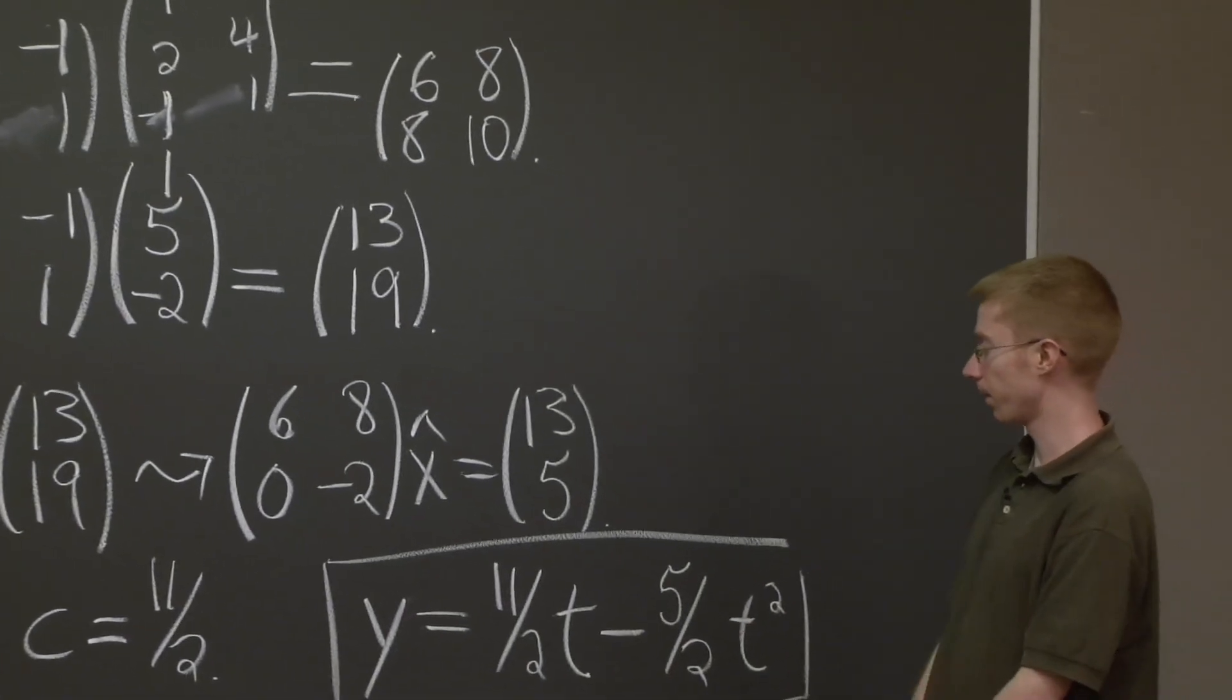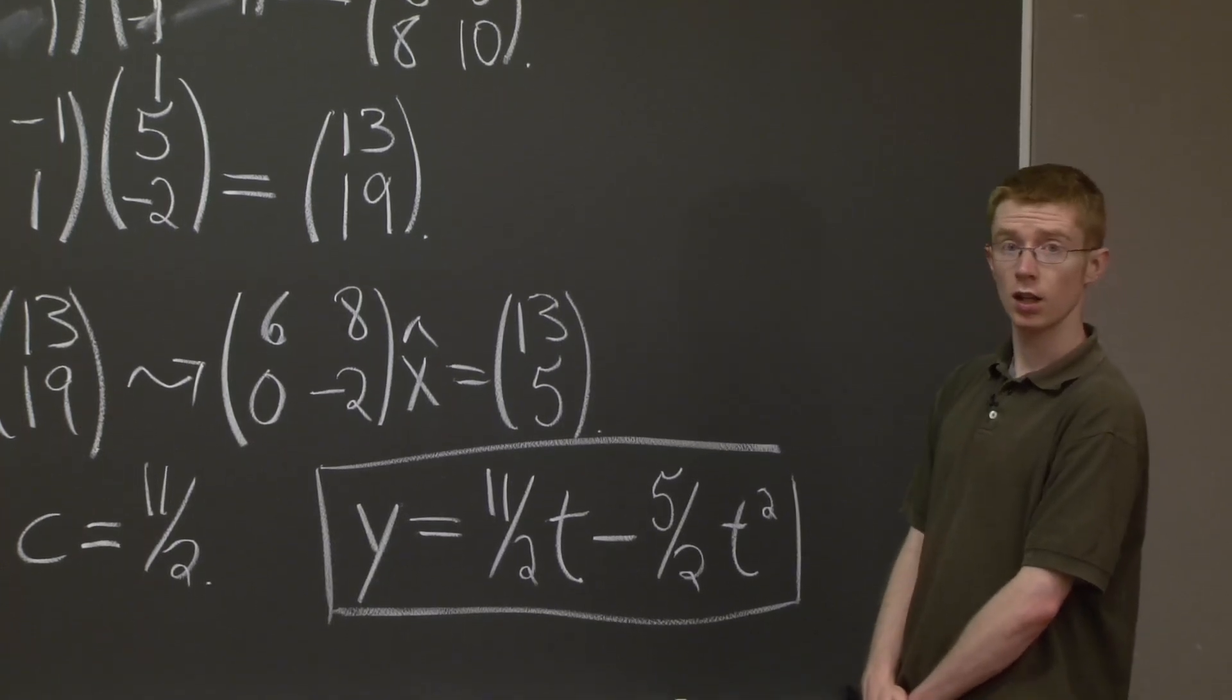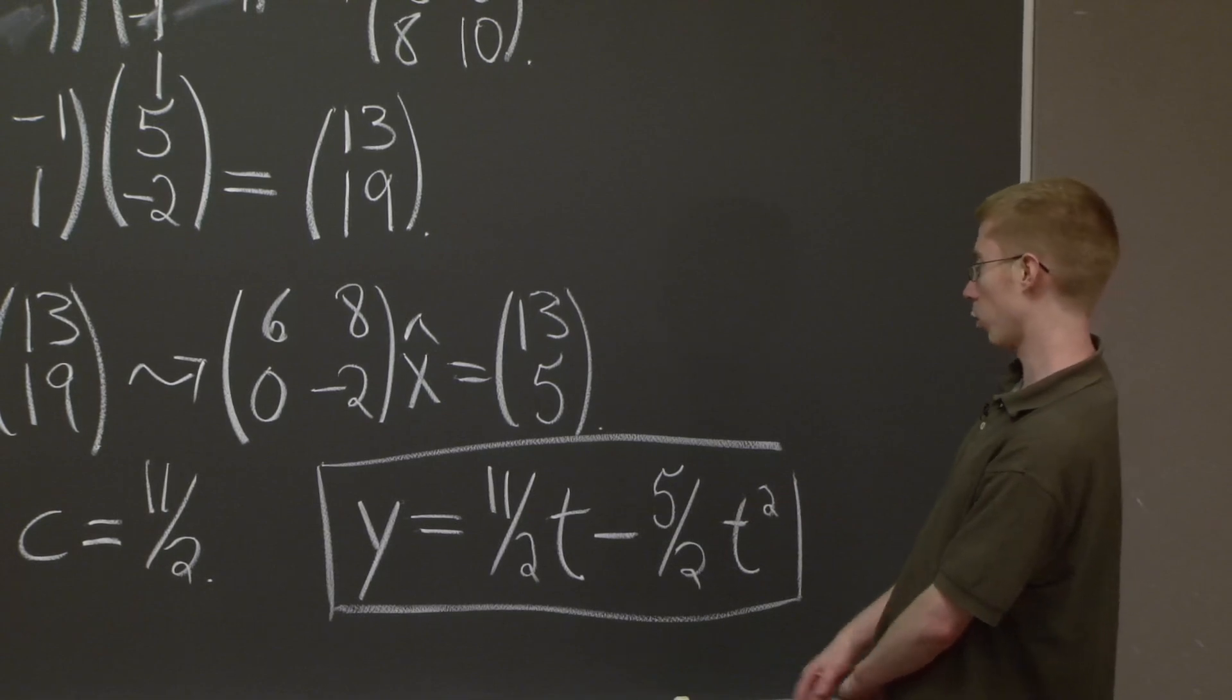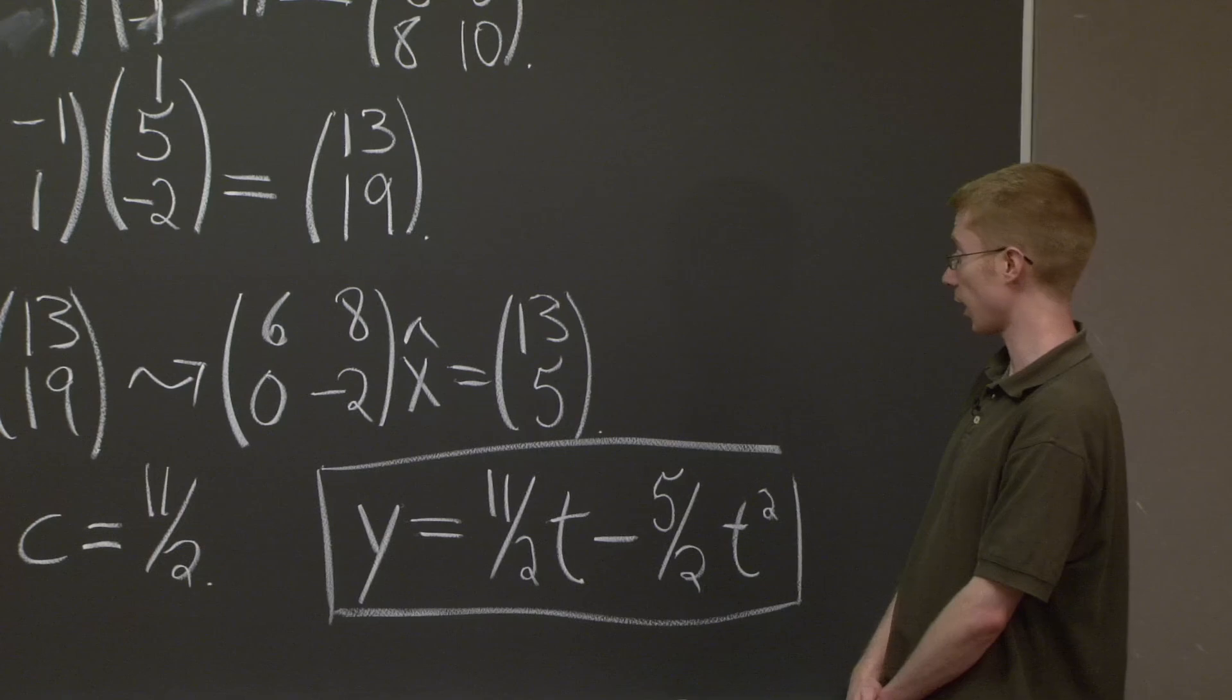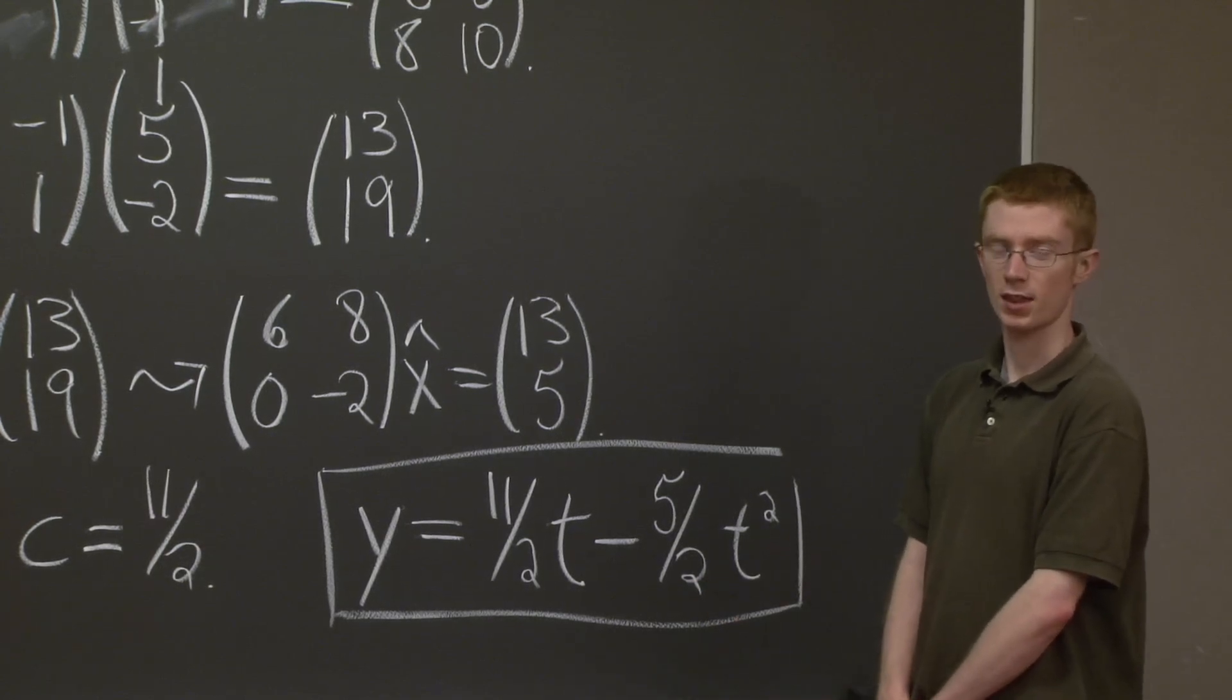It might also be worth noting that these three points certainly aren't on this quadratic equation. For instance, if I plug in 1 here, I don't get (1,1), I get (1,3). But that's okay. This is as close as we can do. Thanks.